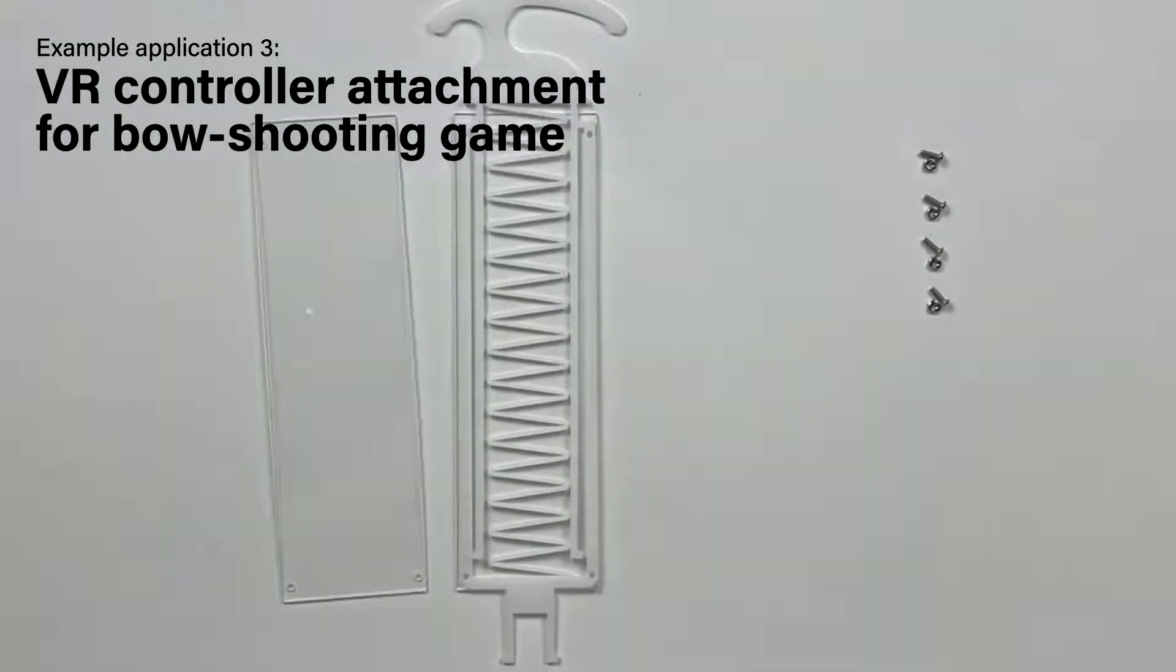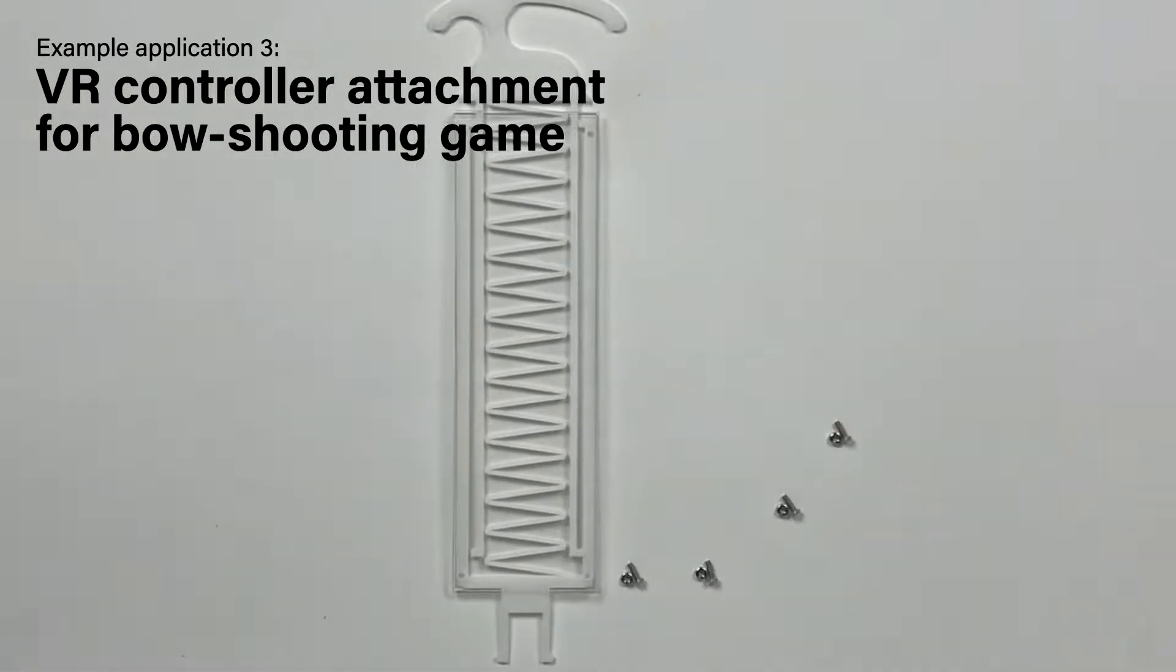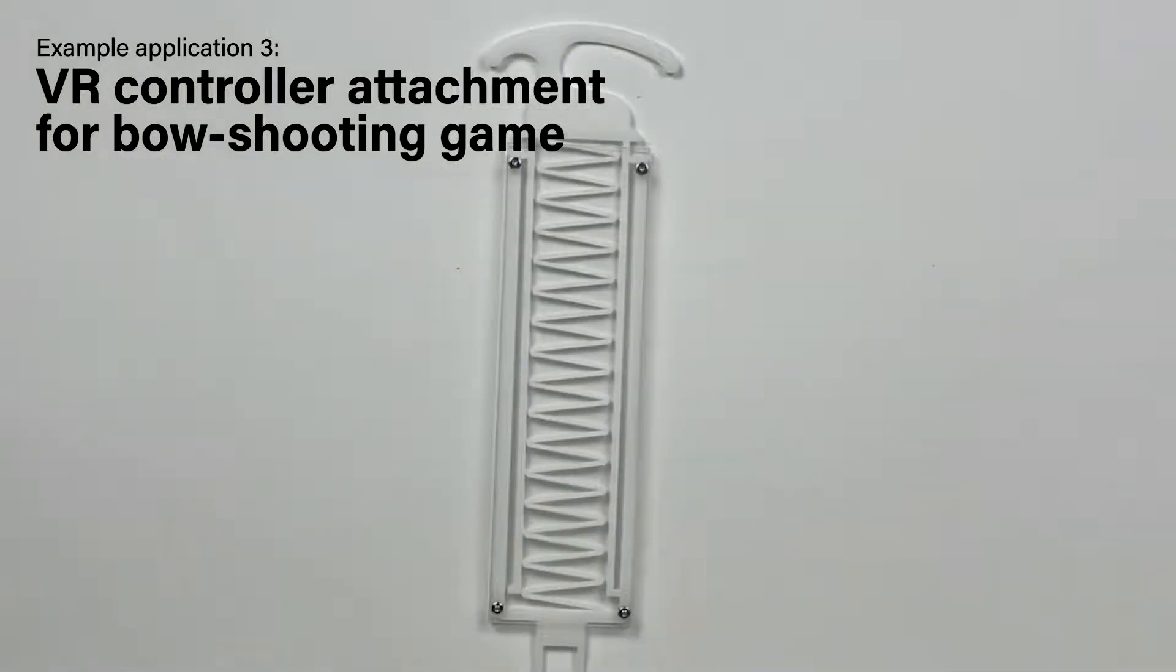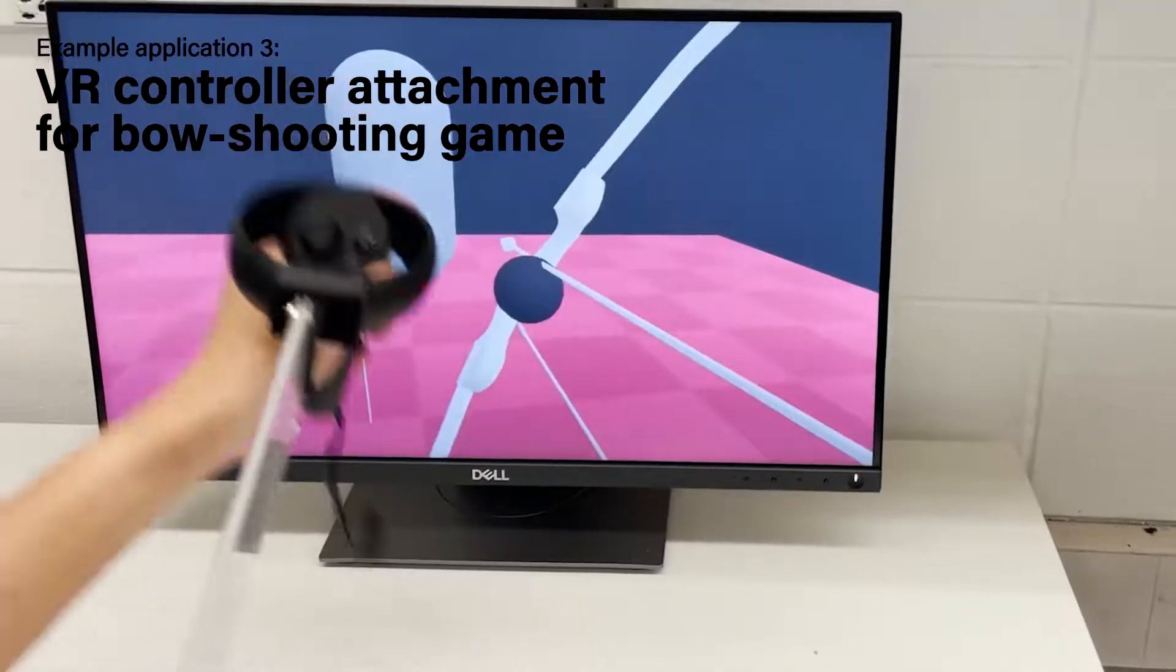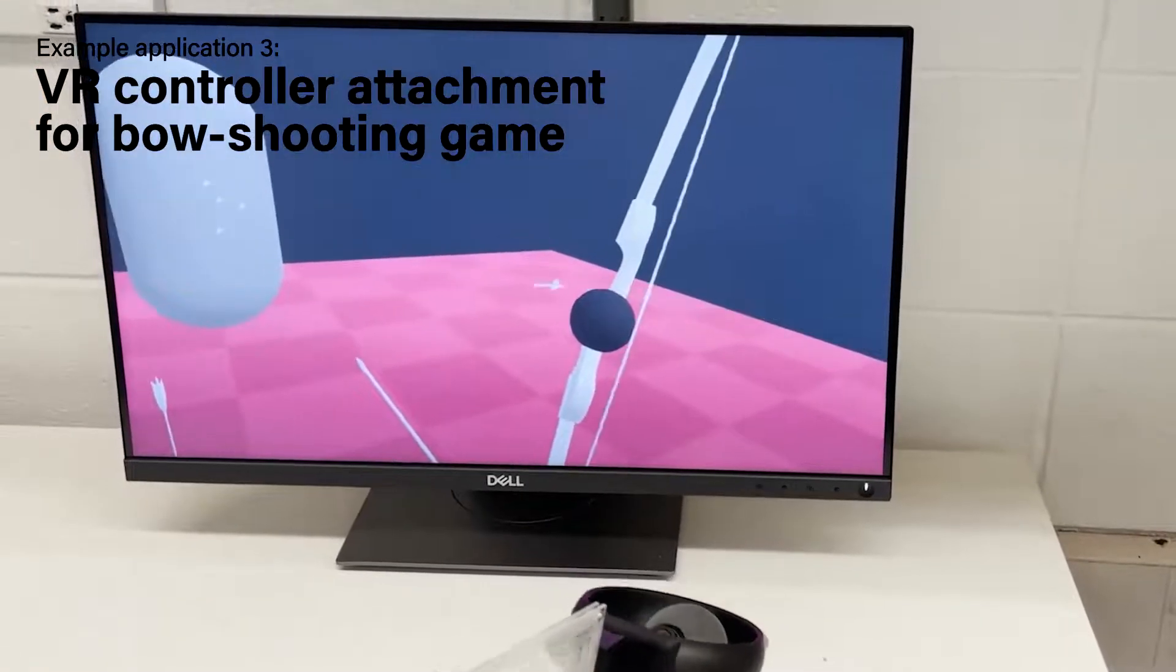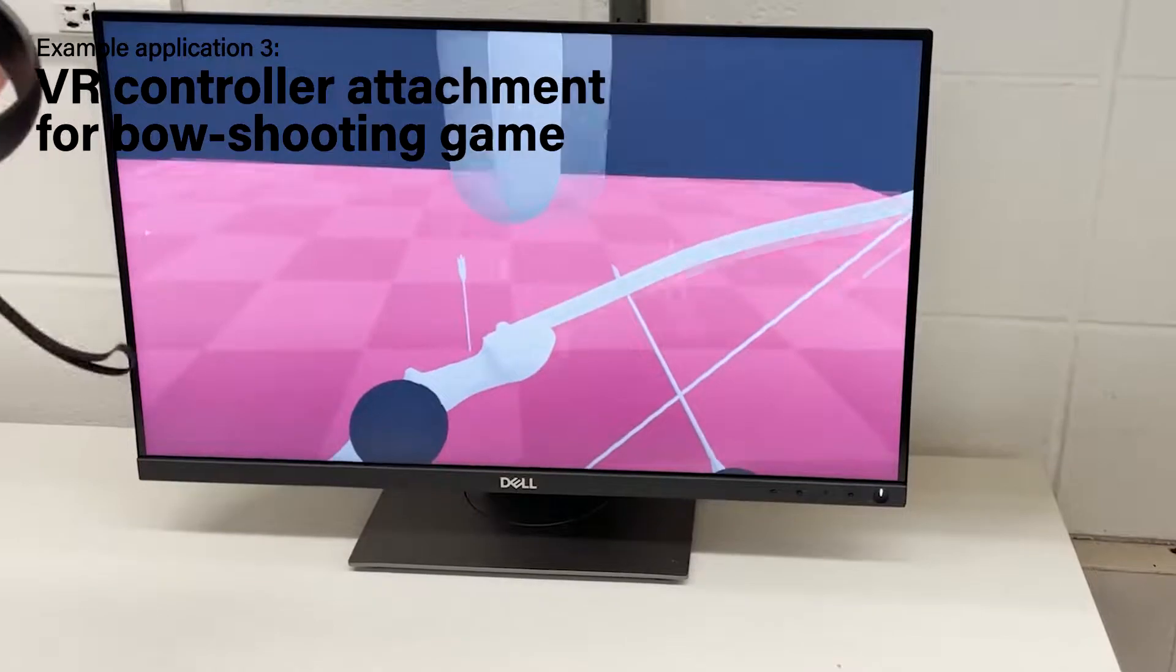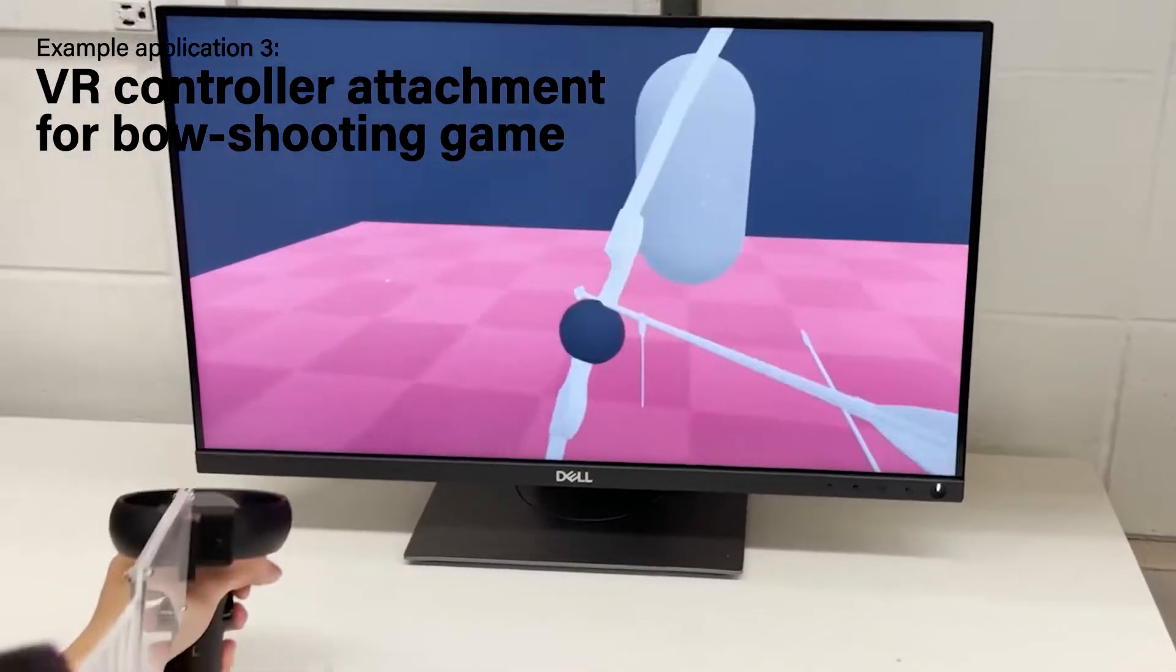We demonstrate the modules are suitable as haptic proxies in VR. The VR controller attachment consisting of a linear bounce module simulates increasing resistance while opening a bow and retracting effects while releasing an arrow.